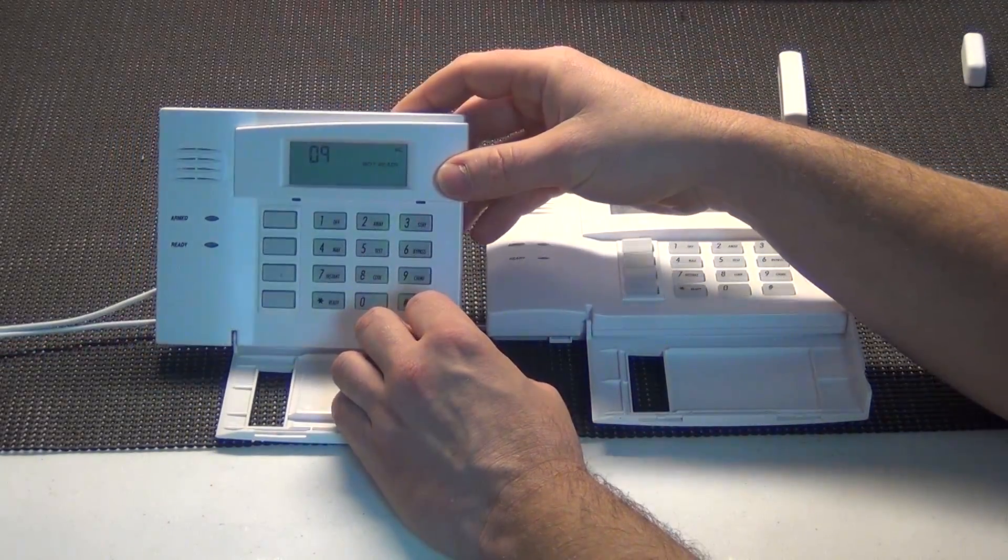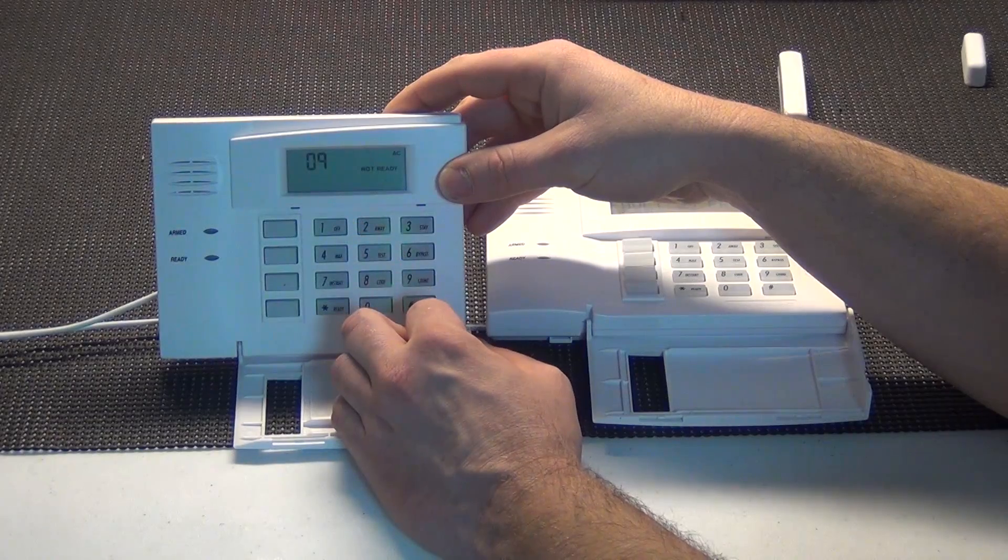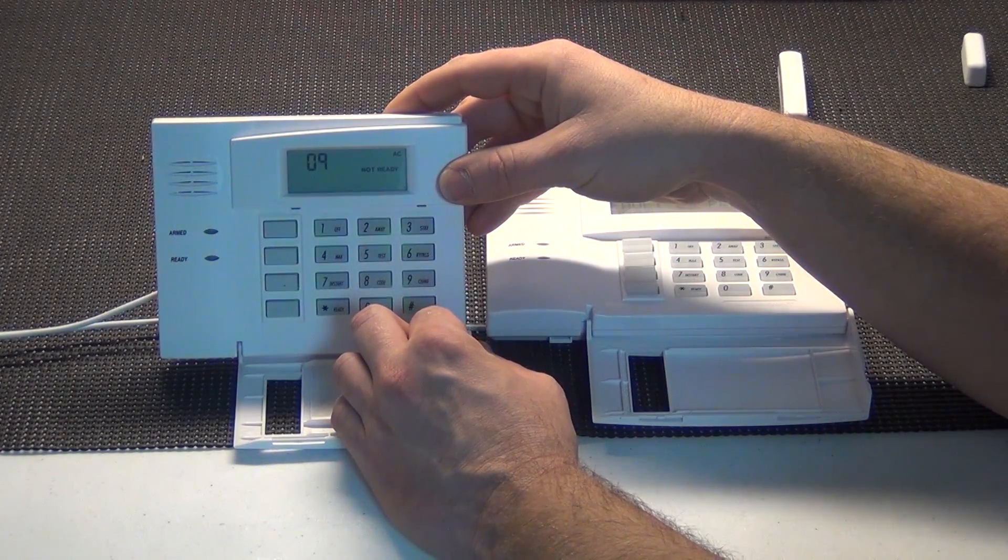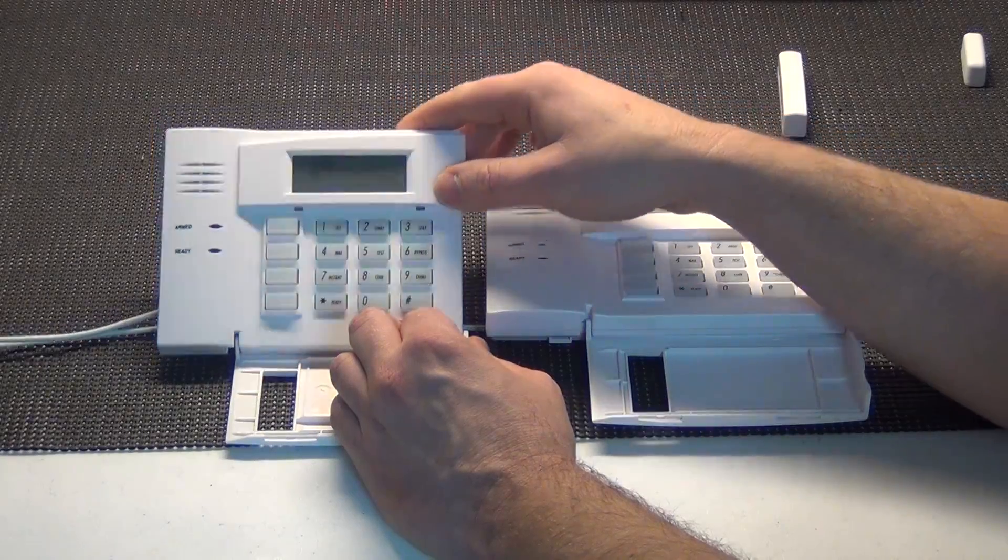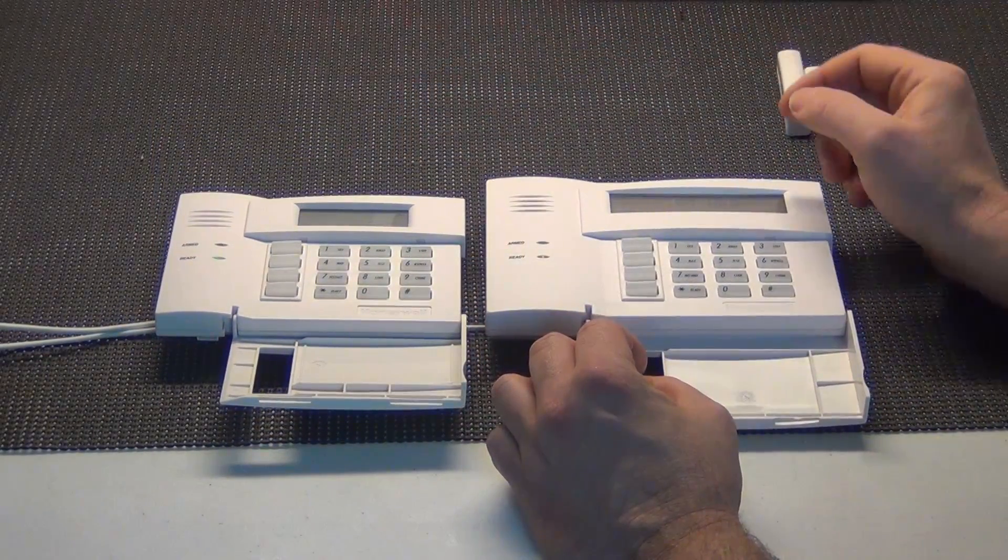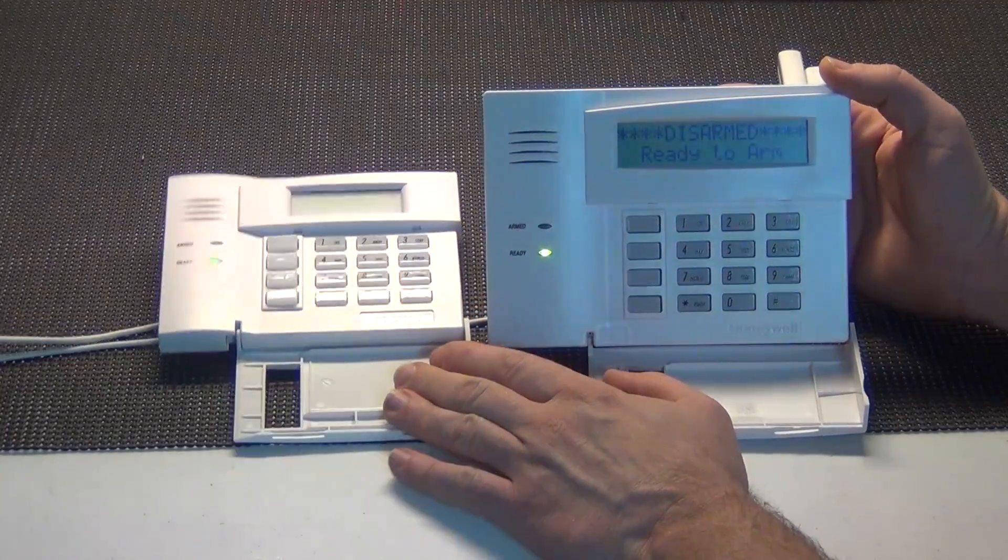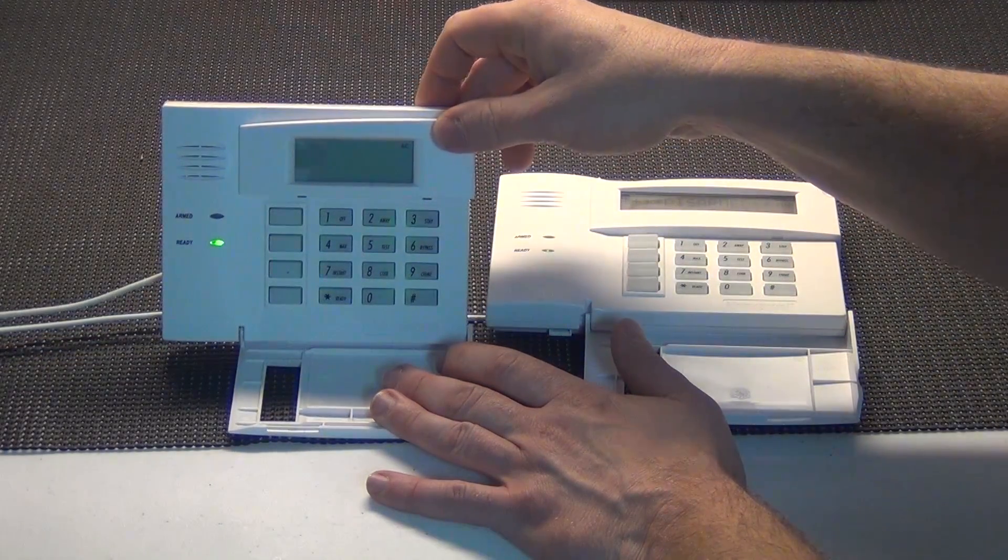Now on your 6150, as you can see here, it says not ready 09. So you're not going to get the rich alphanumeric display on the 6150. Let's go ahead and put this back here and that will clear the fault out: disarmed, ready to arm on the 6160, and then it goes back to a blank screen on the 6150.